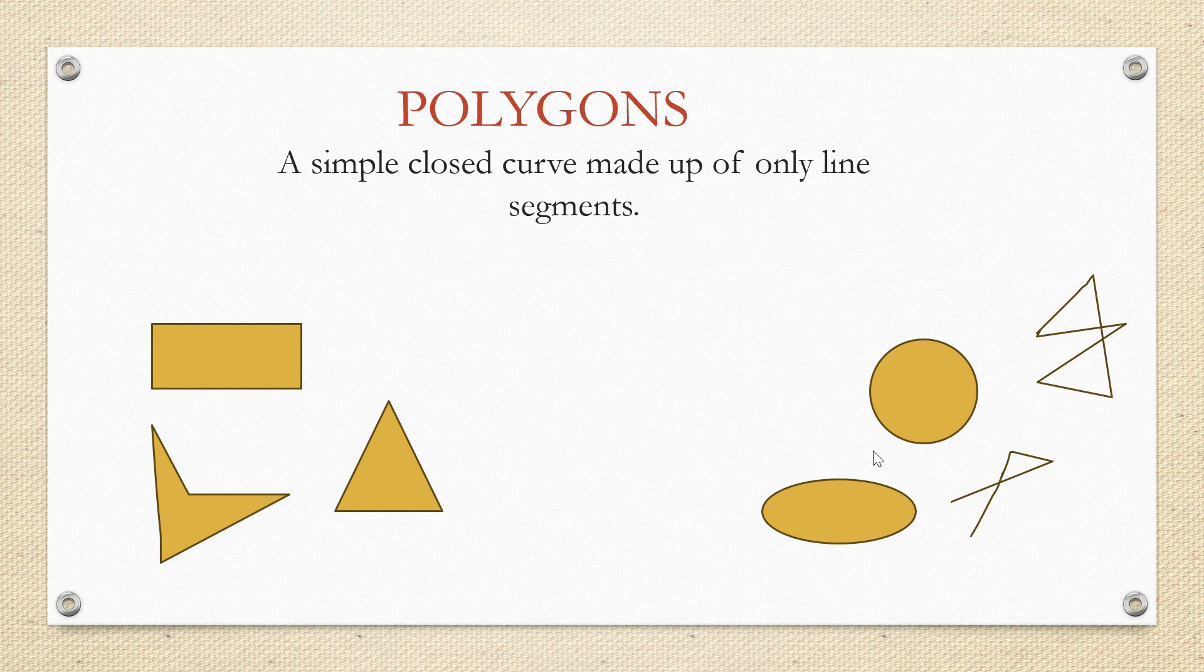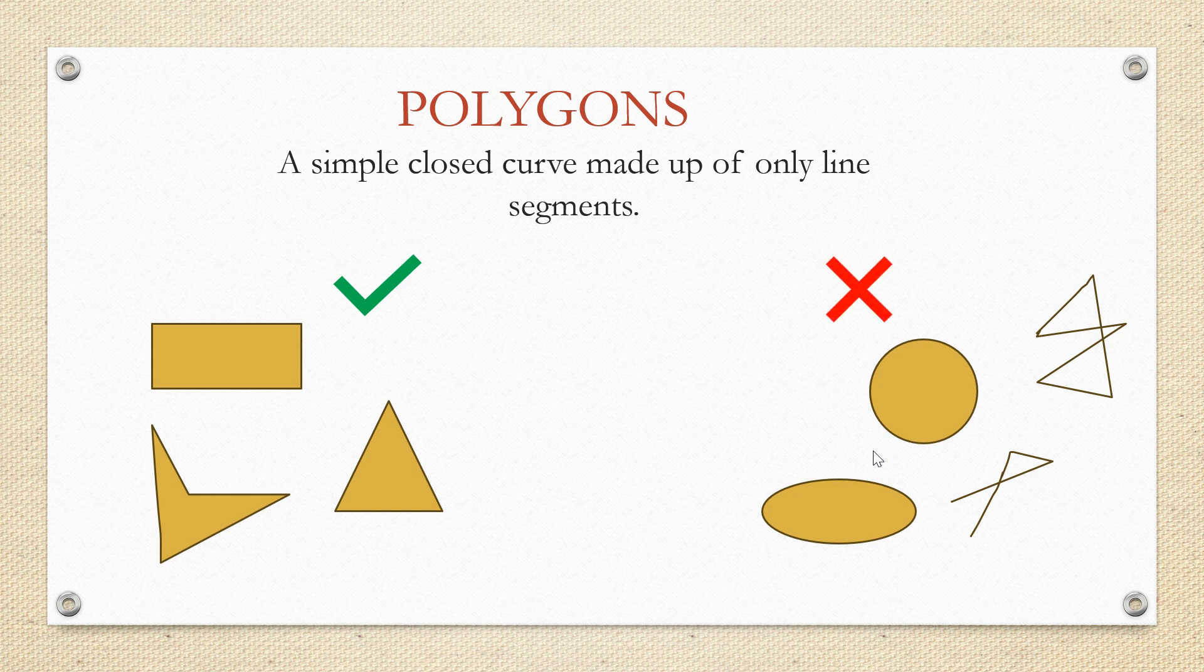If we look at the second set, the figures are formed using bent lines and those figures that are with straight lines have line segments crossing each other. So these figures in set B are not polygons.